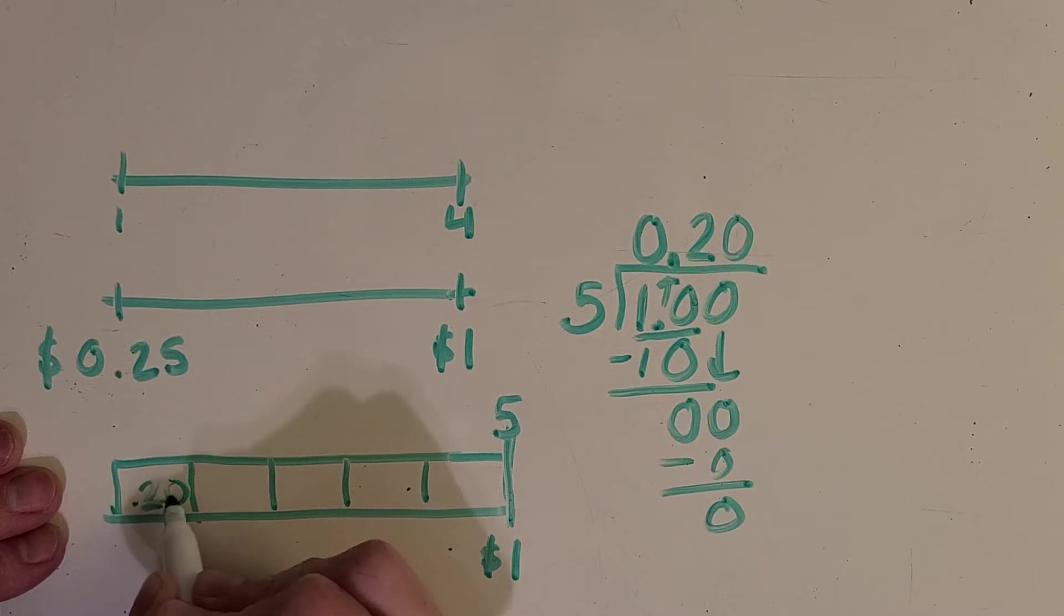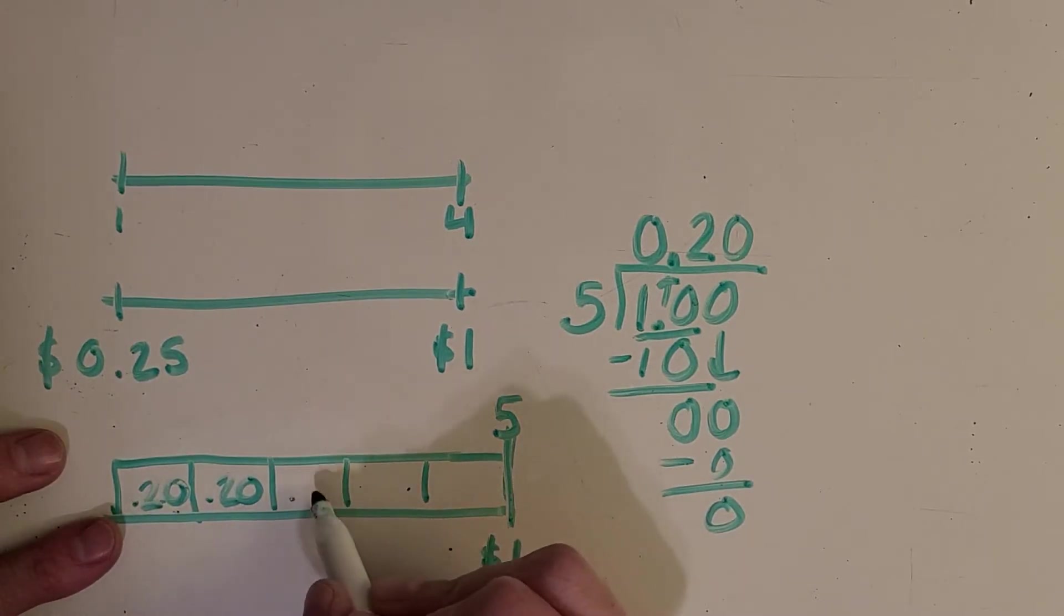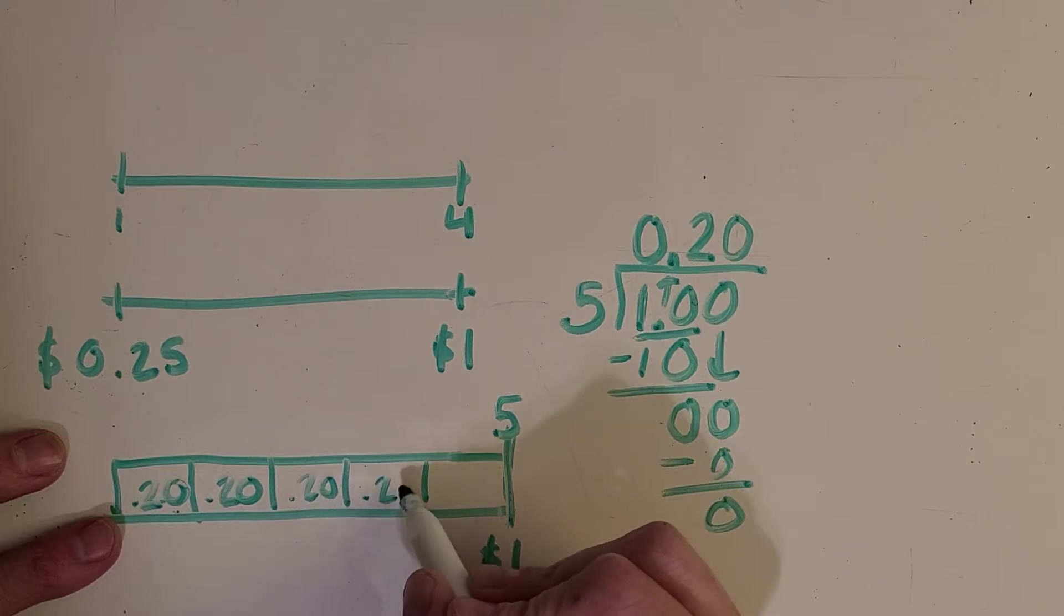And in a strip diagram we just fill them all in. And let's just check our work as we go. So twenty cents, forty cents, sixty, eighty, and a hundred or a dollar.